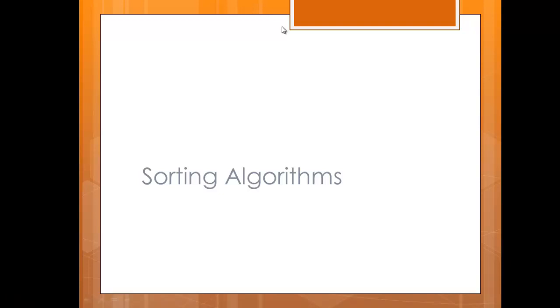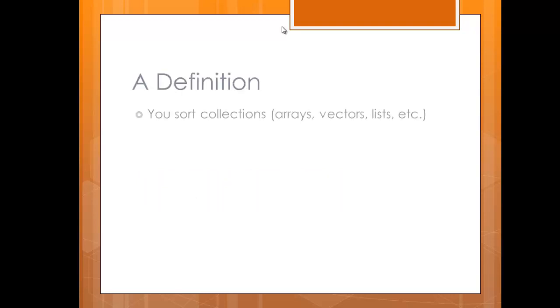Alright, we're going to talk now about sorting algorithms. I can't imagine this taking fewer than two videos to cover, but it's just a general overview. We're going to do a little definition. Basically, you're going to sort a collection. That might be an array, it might be a vector, it might be a list. If you're in Python, it could be a tuple. Anything that is a collection of items, also known as a sequence, you can sort.